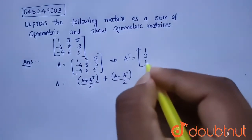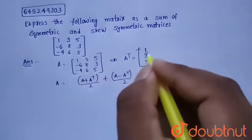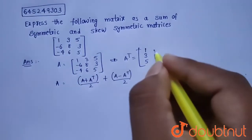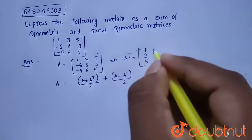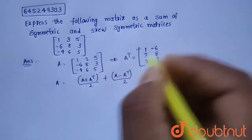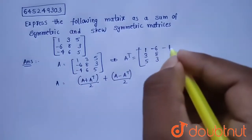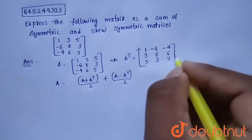So A transpose is: row 1 becomes [1, 3, 5] (converted from column 1), row 2 becomes [-6, 8, 3], and row 3 becomes [-4, 6, 5].